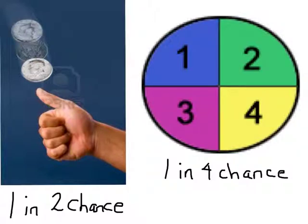On the spinner here, we have a 1 in 4 chance of getting any one particular number. We have a 1 in 4 chance of getting a 3, say for instance, because there's only one 3 out of 4 different possible outcomes.